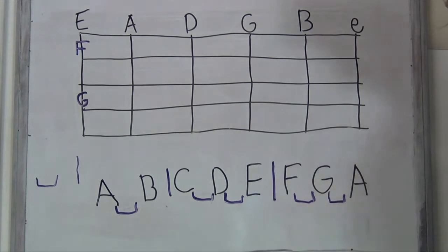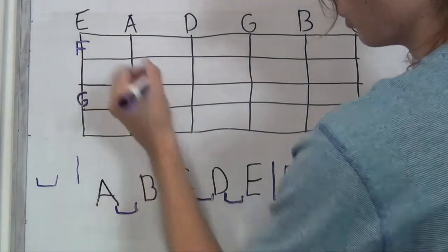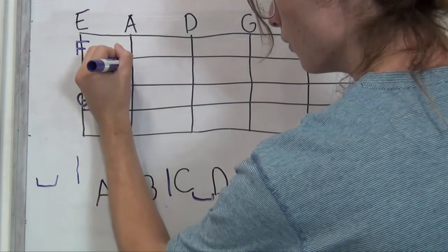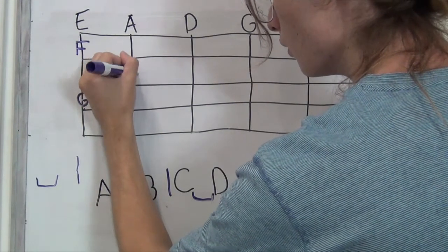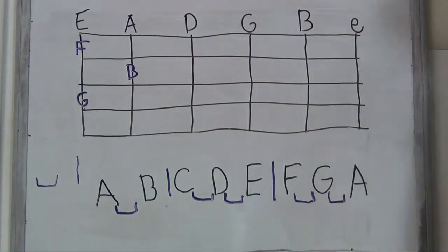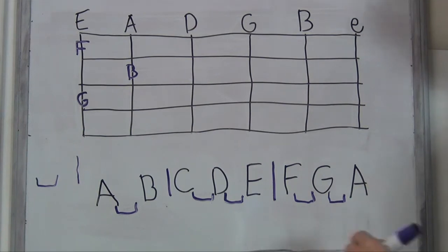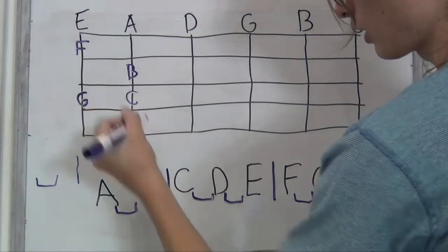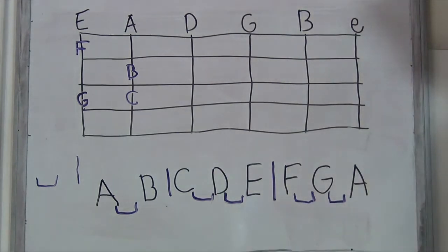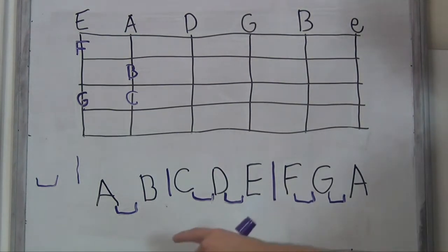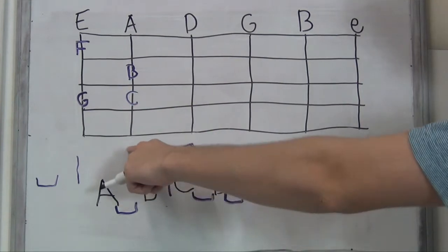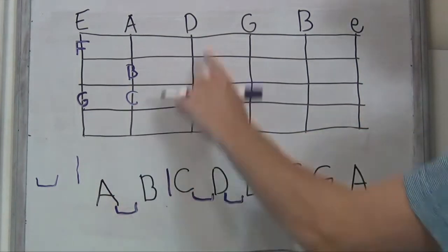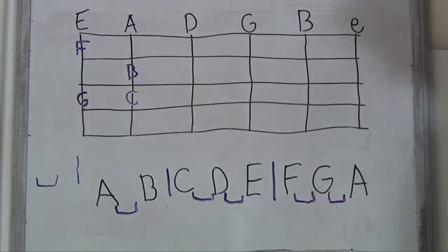So now we've looped back to the beginning here, and we're back at A to B. A to B is a whole step, so we're going to go two frets up — and there's our B. B to C is one of those two half steps that we need to memorize, so that's just the very next fret. C to D is another whole step, and you can see it would land on the fifth fret here, so we're just going to play that open.